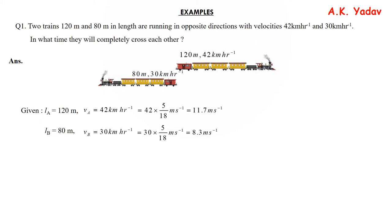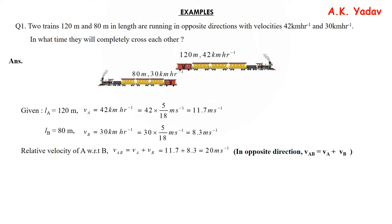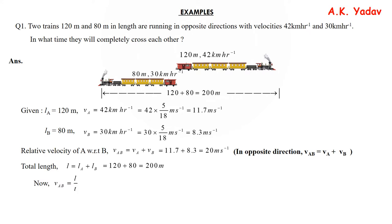Since the trains are crossing in opposite directions, VAB = VA + VB. Putting in values gives VAB = 20 m/s. The total crossing length is 120 + 80 = 200 meters. Using T = L / VAB = 200 / 20 = 10 seconds.